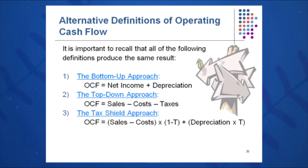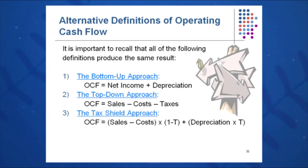Number one, the traditional method: OCF equals EBIT plus D minus T. That is the traditional one, and you can use that for any case, even if your income statement includes interest expense. That one is always the safe one, and we've learned that in Chapters 2, 3, and 10.